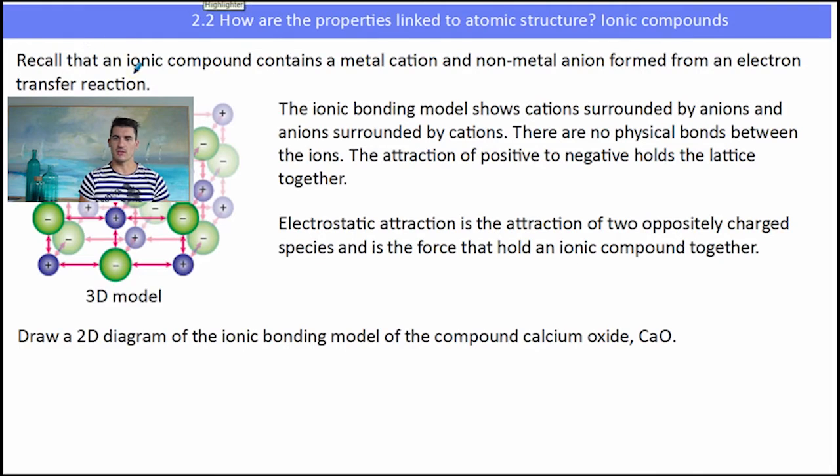Okay, so the ionic bonding model. Well, first of all, an ionic compound contains a metal cation and a non-metal anion formed from an electron transfer reaction, which we talked about last week, our last video. So we've got the model on the left, which shows cations surrounded by anions and anions surrounded by cations. The attraction of the positive ions and the negative ions hold this lattice together.